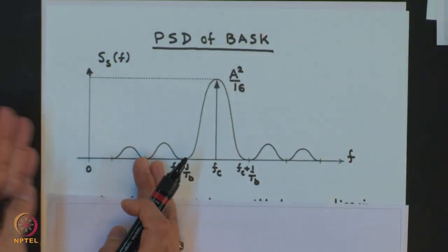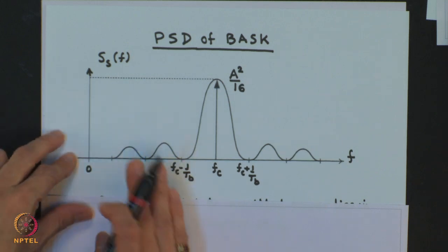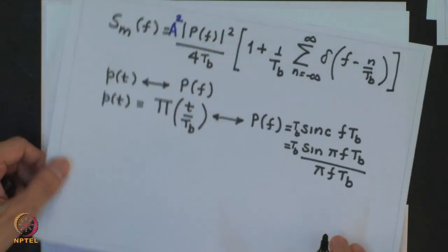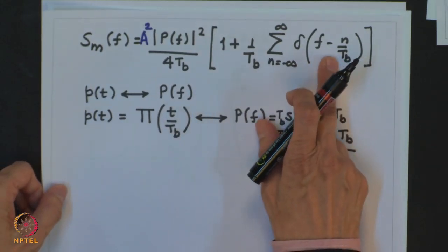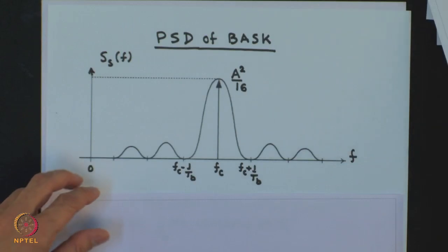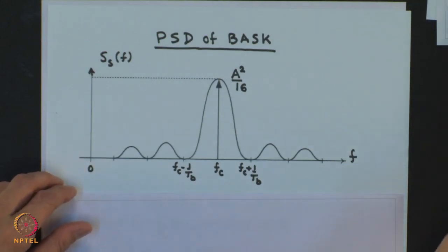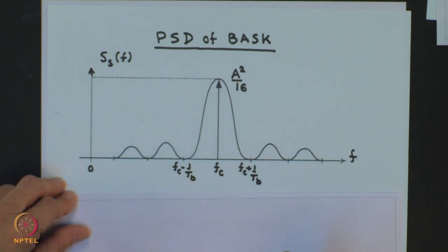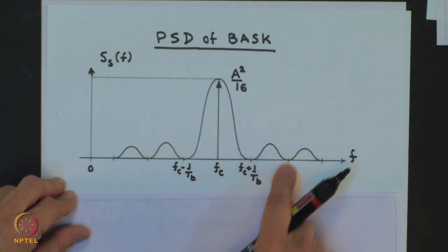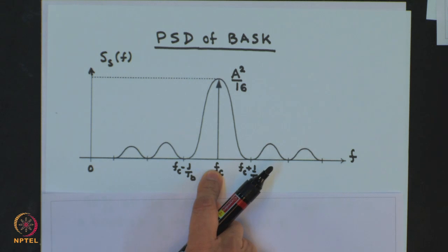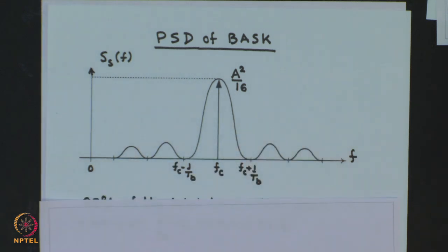Showing the positive side of the frequency axis: the power spectral density has impulses at 0, 1/T_B, 2/T_B, and so on. The impulses at 1/T_B, 2/T_B, and beyond are suppressed due to the zeros of the sinc function at those positions. So you see only one impulse at F_C. This is the power spectral density for binary amplitude shift keying.